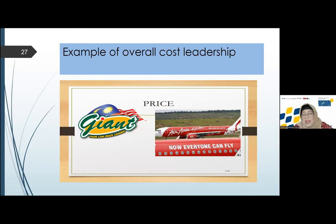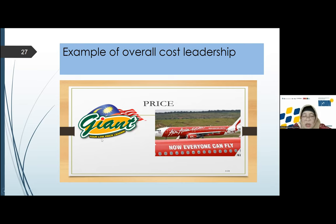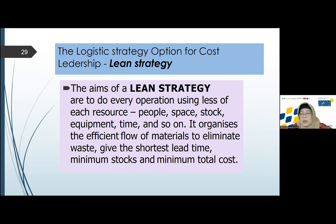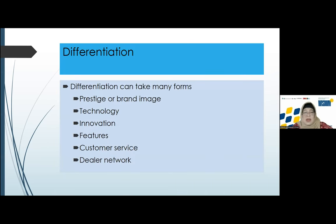Giant's competitive advantage is low price — the tagline is 'your low price leader.' Air Asia's tagline was 'now everyone can fly.' This is a value chain — how to fulfill the strategy with a value chain. If we have cost reduction, lean strategy is very important. Lean strategy is about reducing waste, and also reducing price. Now we come to differentiation — it is the opposite of low price: specific quality and high price.